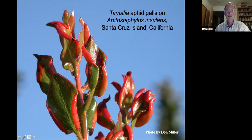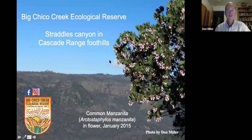This photo, taken on Santa Cruz Island, shows leaves with galls caused by Tamellia aphids on Arctostaphylus insularis, the island manzanita. They sometimes produce anthocyanin pigment, making them bright red and relatively obvious on the landscape. They may be the size of a dried kidney bean. Most of the work I'll discuss is situated at Chico State's Big Chico Creek Ecological Reserve — essentially a swath of canyon about 1,600 hectares upstream from Chico's Bidwell Park.